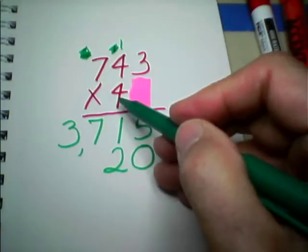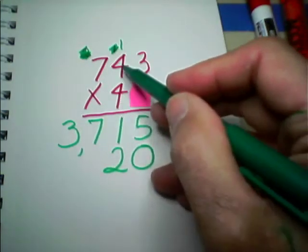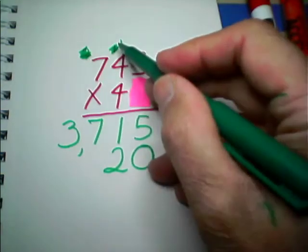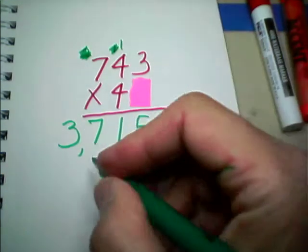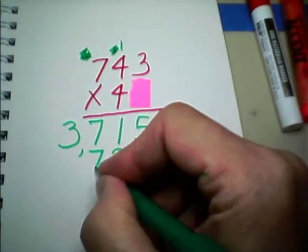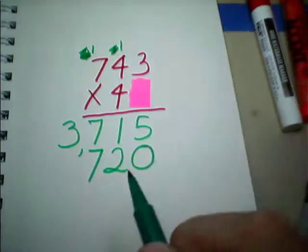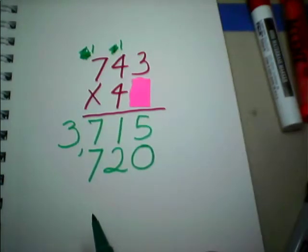We look at our multiplier again. 4 times 4, 16, plus the 1, 16 plus 1, is 17. So, we write down the 7 from 17, and we carry the 1 from the 17 over there to the 100s, and give it a rest.